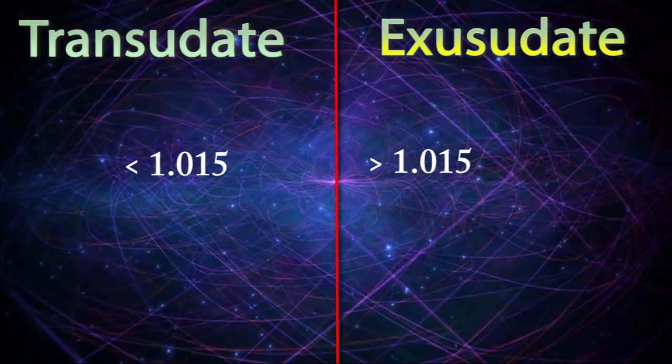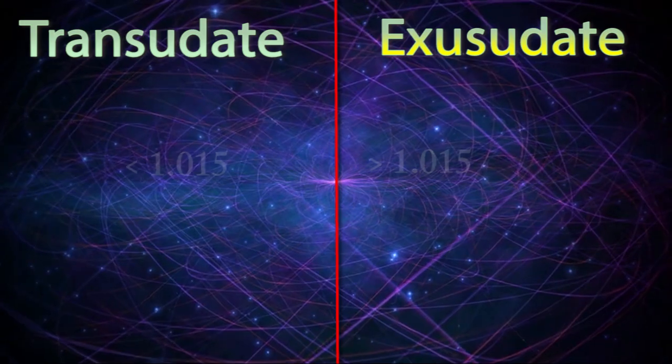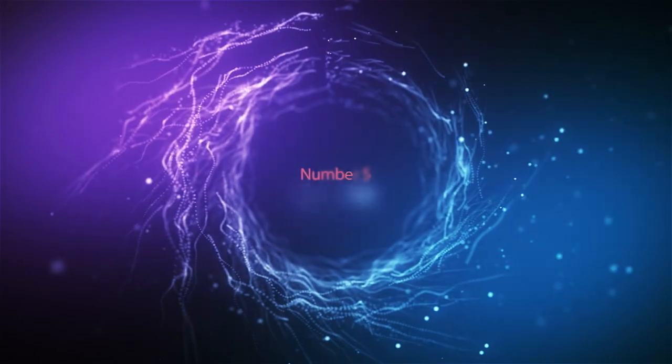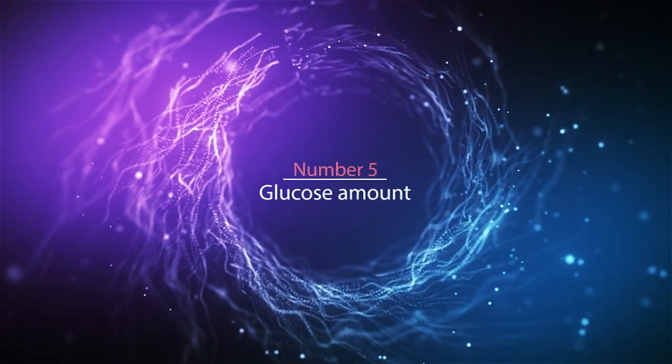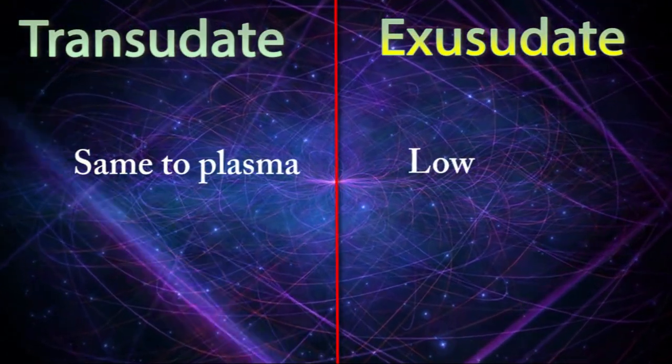Difference number five: glucose amount. Transudate always contains the same glucose concentration as plasma, but exudate contains much lower glucose concentration than plasma.